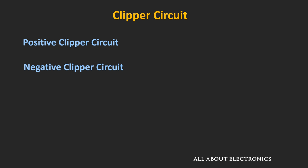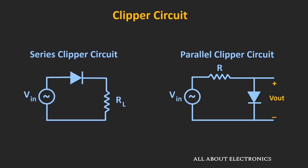Further, depending on the position of the diode, it can be classified as either a Series Clipper or a Parallel Clipper Circuit. In the case of the Series Clipper Circuit, the diode is connected in series with the load resistor. While in the case of the Parallel Clipper Circuit, the output is measured directly across the diode — or in other words, the load is connected in parallel with the diode. We will see all the different types of Clipper Circuits and solve some examples. But first, let's see the Parallel Clipper Circuit.